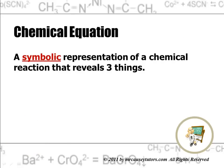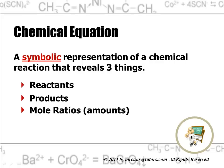A chemical equation is a symbolic representation of a chemical reaction, and it reveals three things: the reactants, the products, and the mole ratios or the amounts. Learning to write a good chemical equation and then balancing it — as we'll do in the next lesson — allows us to understand what we're doing. It allows us to do stoichiometry, percent composition, and all these different things that are based on what we know about chemical equations.